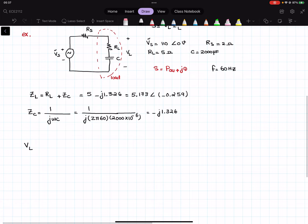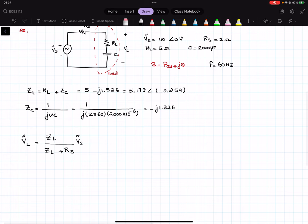VL, that is the RMS value of the load voltage. If I use the voltage divider, I can write this as ZL, that is the impedance of the load, over ZL plus Rs. Now, this multiplied by Vs. So I just use the voltage divider in order to find the RMS value of the load voltage. Why is it the RMS value? Because the input that I have, Vs, is already in the RMS format.